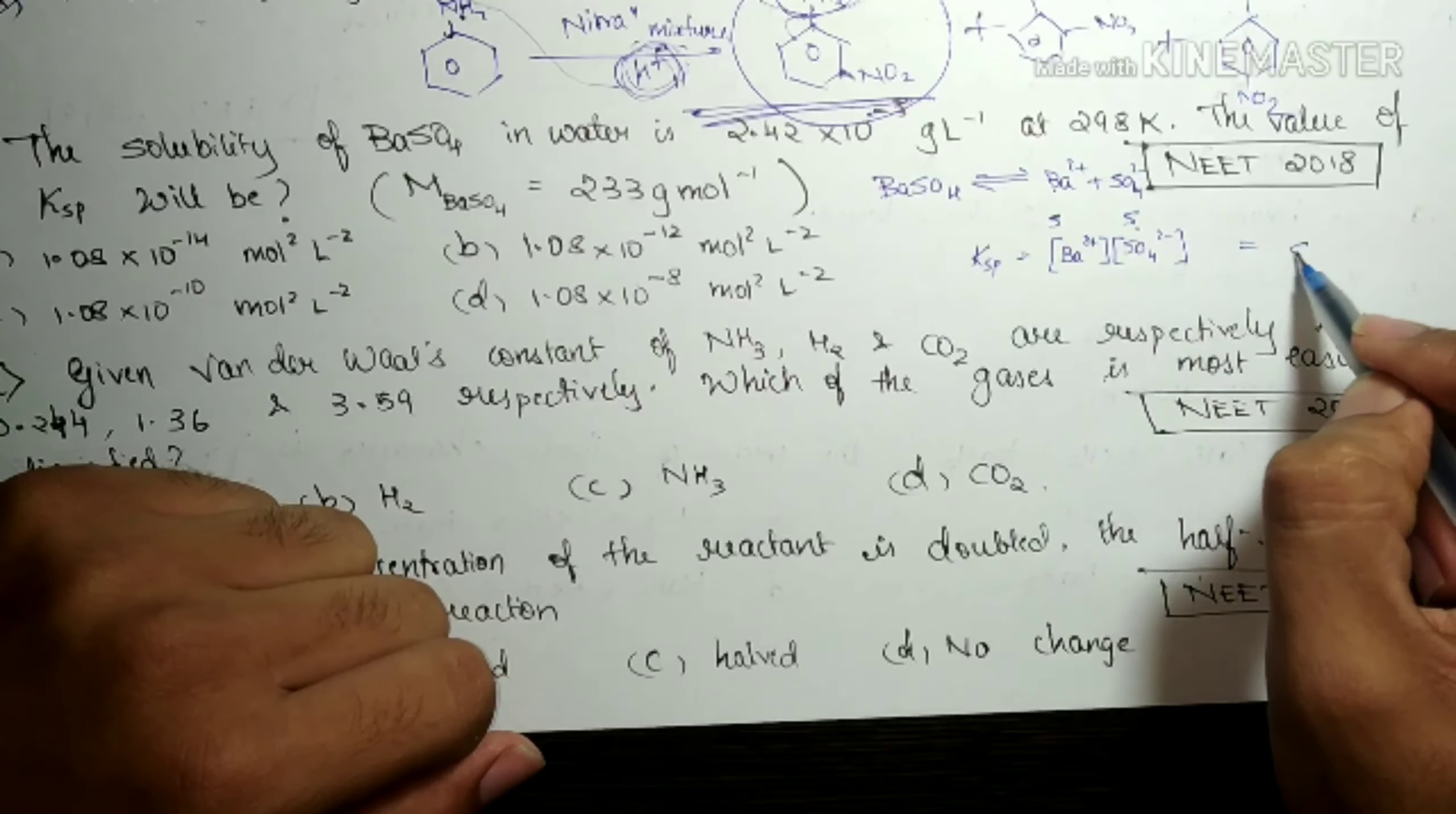But take care that S is given in grams per liter. S should be concentration. In equilibrium, we are always supposed to mention concentration in moles per liter, that is molarity. So all you have to do is 2.42 × 10^-3 divided by the molecular mass of BaSO4 which is given here, that is 233. And all you have to do is just square this. You will be getting answer as 1.08 × 10^-10 mol square per liter square, that is nothing but molarity square.